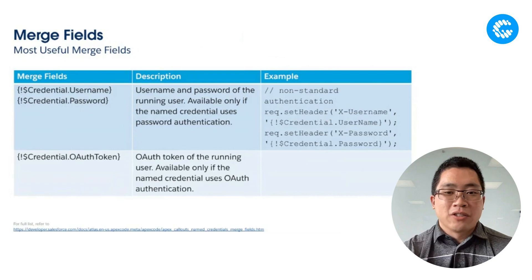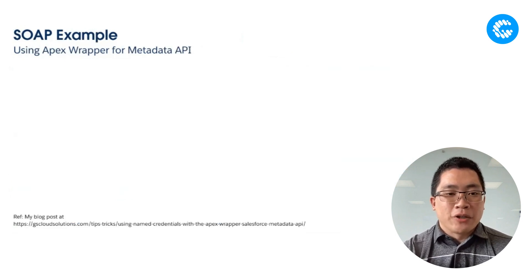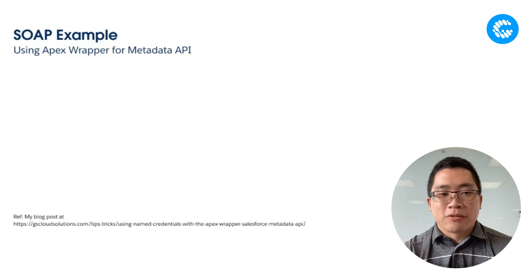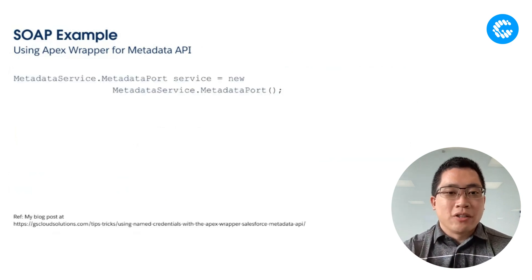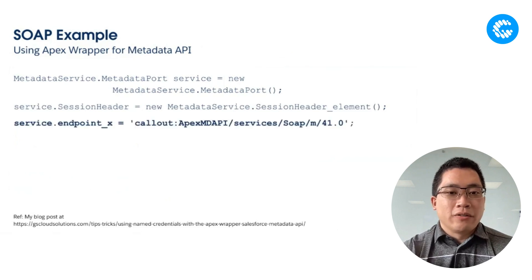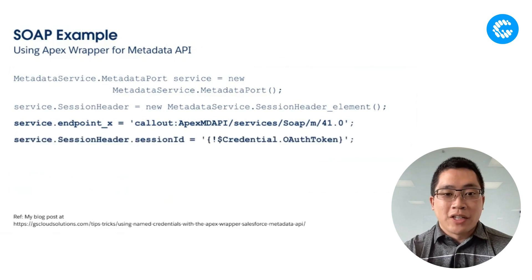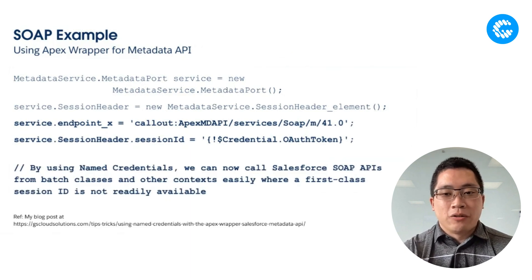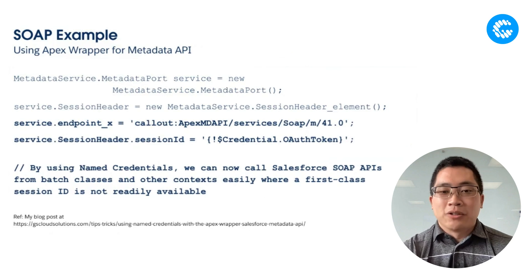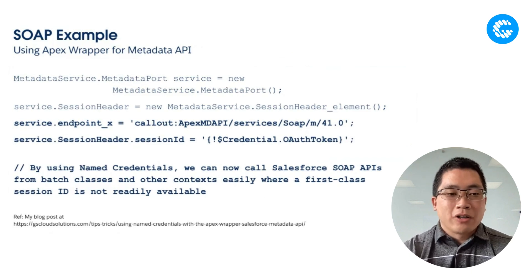Take a look at the documentation as Salesforce is continually improving the product. One specific real business case we had was attempting to use the Apex wrapper for Salesforce's Metadata API — a scenario where we didn't want to hardcode usernames and passwords but there wasn't an obvious way to use named credentials. We ended up modifying one of the generated Apex classes to reference the named credential and using the merge field syntax to set the session ID on the request. This allowed us to use named credentials in places where API tokens or session tokens aren't available, like batch classes — a really good solution.